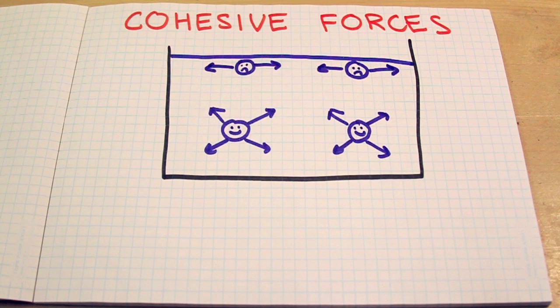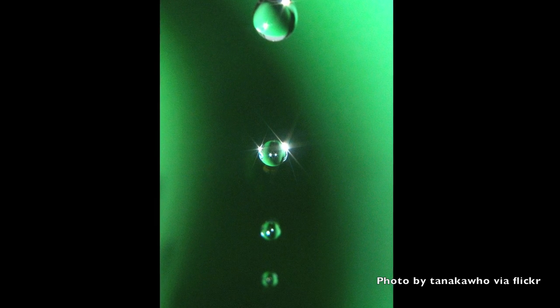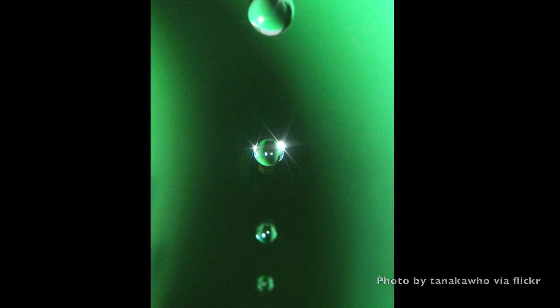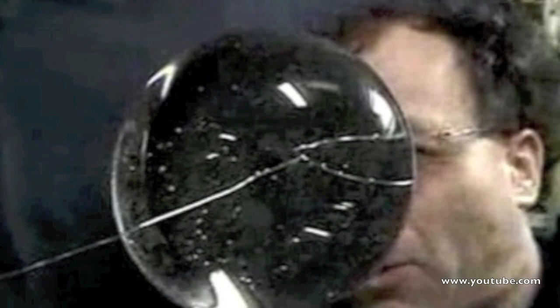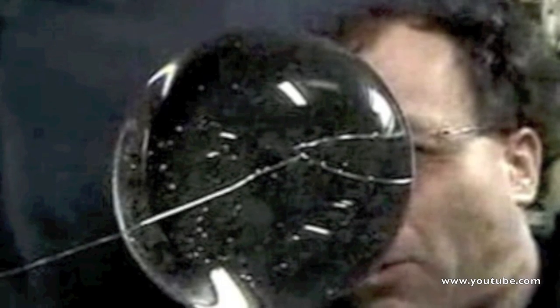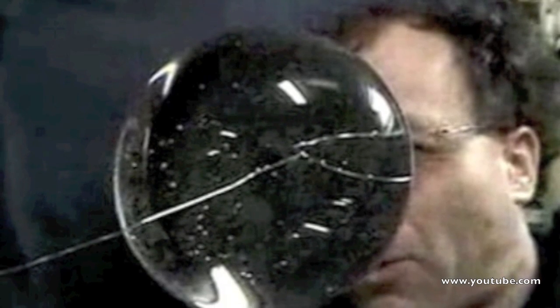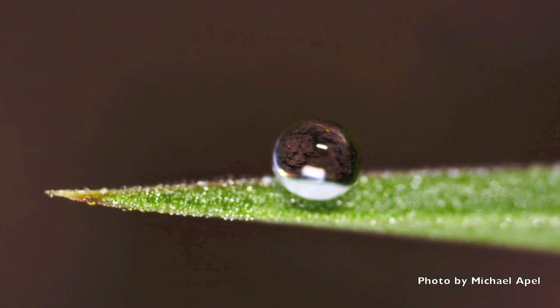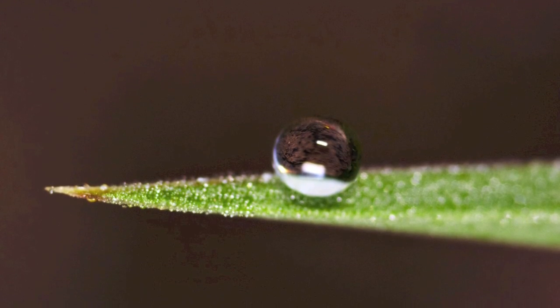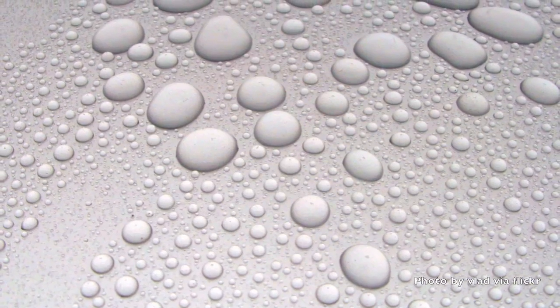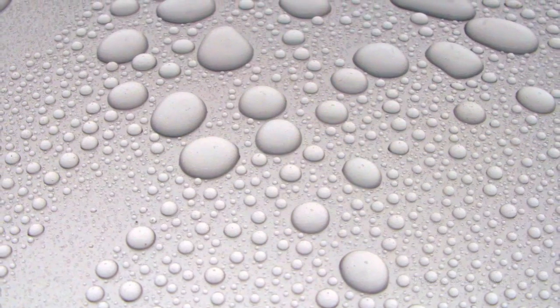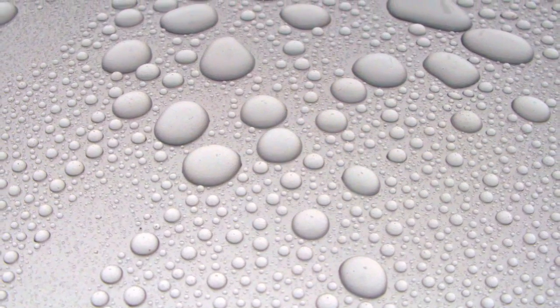To minimize the number of unhappy molecules, liquids adjust their shape to expose the smallest possible surface area. That's why water droplets are spherical, and why in space, blobs of water also take the form of spheres. But what about water droplets resting on a surface? What determines whether they will bead up and roll off, or spread out completely?